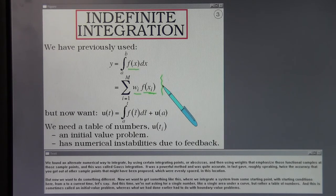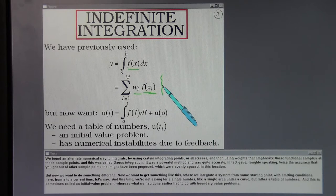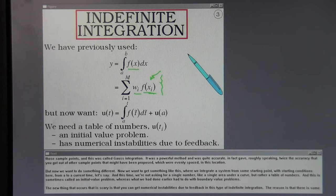This was called Gauss integration. It was a powerful method and was quite accurate. In fact, gave roughly speaking twice the accuracy that you got out of other sample points that might have been proposed, which were evenly spaced in this location.